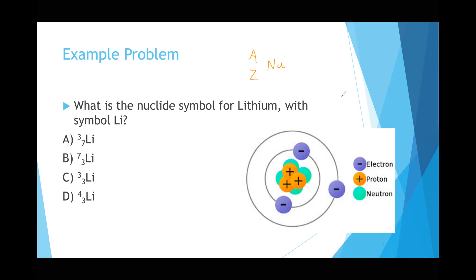There are three more people who haven't voted — two more. Okay, I'll share the results. Seven voted. So as you can see, there was a kind of even split between A, B, and also D. So now I'll go over it.